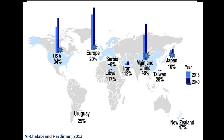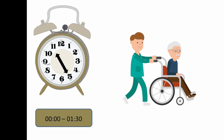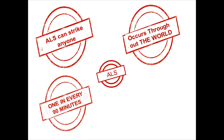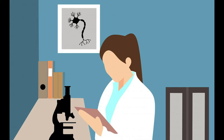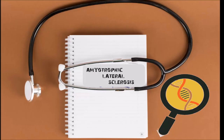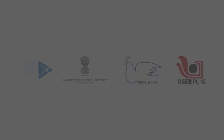Based on the ALS Association survey, this disorder can strike anyone — it occurs throughout the world with no racial, ethnic, or socioeconomic boundaries. Every 90 minutes someone is diagnosed and someone passes away due to ALS. Among 90 percent of cases, ALS occurs without any family history. Since ALS is a very complicated disorder with no known cure so far, it becomes extremely important to establish the roles of genes and cells and finally end the misery of ALS patients.